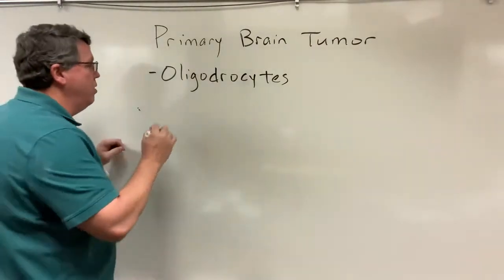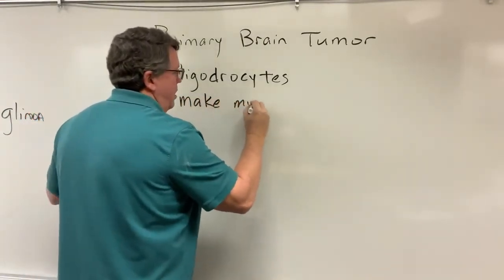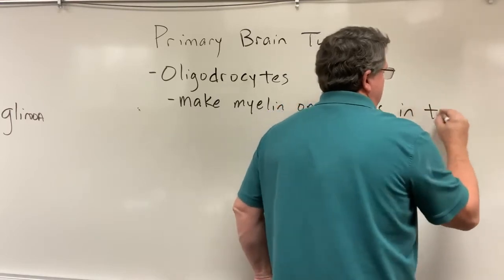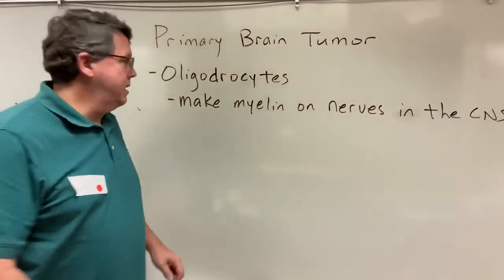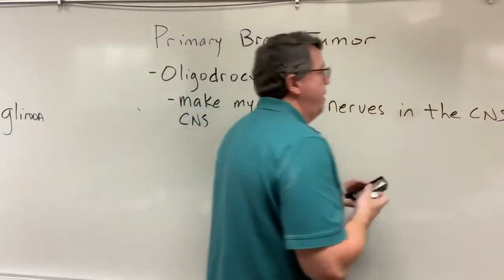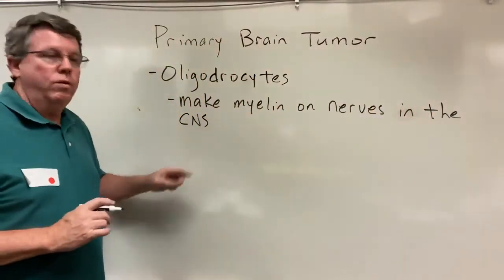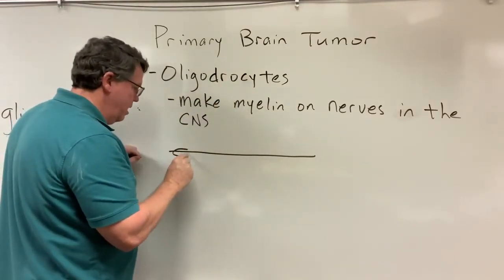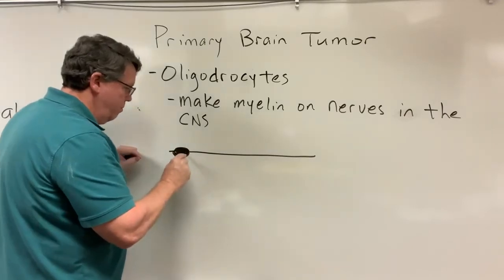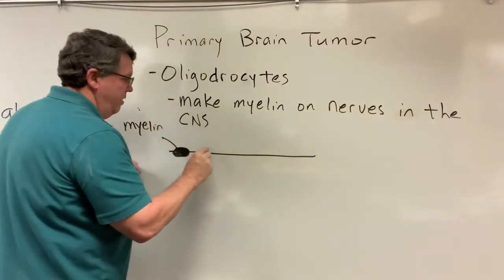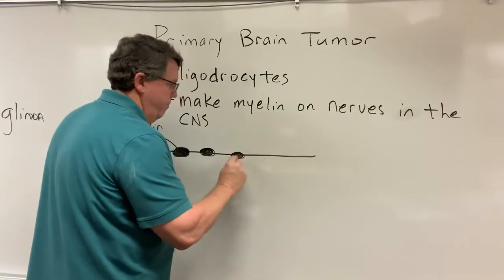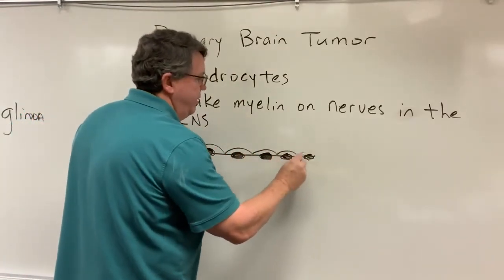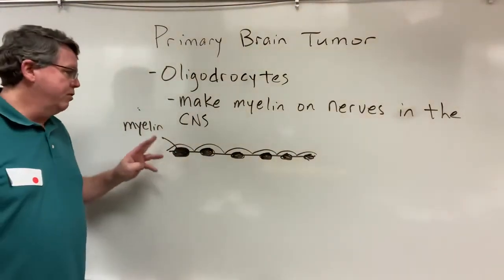So what do oligodendrocytes do? What they do is they make myelin on nerves in the central nervous system, and actually in the brain. So basically, let's say you have a nerve — the oligodendrocyte will actually make myelin which covers up parts of the nerve. This is called myelin, and you'll have several of these on here. Then what happens is the nerve impulse can hop over these and it speeds up the nerve impulse so it can get to the brain faster. That's what oligodendrocytes do.